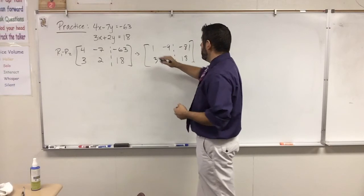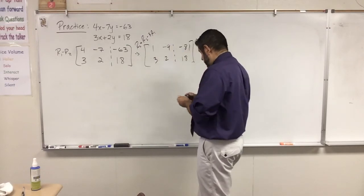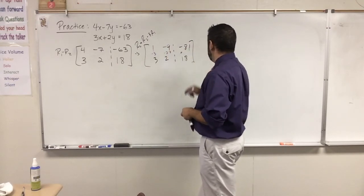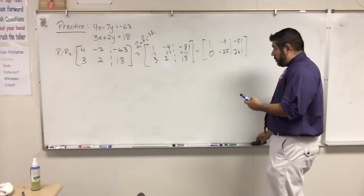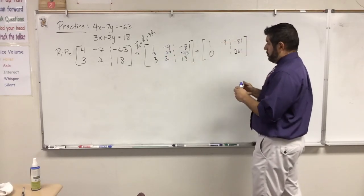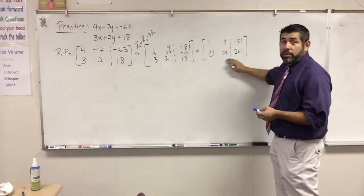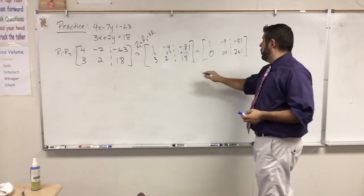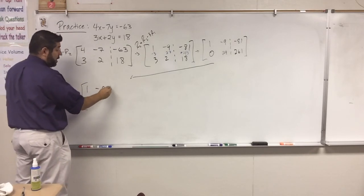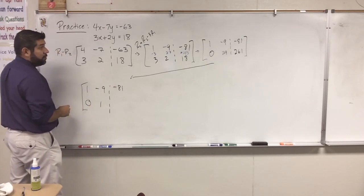Now I want to make the 3 in row 2 a zero, so I'll do R2 minus 3 times R1. That gives: 3 minus 3 is 0; 2 minus negative 27 is 29; 18 minus negative 243 — let me recalculate — that gives 261. So I divide row 2 by 29 to get the leading 1. Row 1 stays: 1, negative 9, negative 81. Row 2 becomes: 0, 1, and 261 divided by 29 is 9.